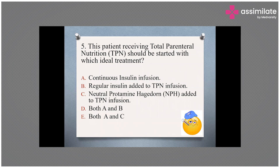The final question from today's case scenario covers management of diabetes in a critically ill patient. The patient presented with subacute intestinal obstruction and has been advised total parenteral nutrition. The question is: what should this patient be started with? Options are: A) continuous insulin infusion, B) regular insulin added to TPN infusion, C) NPH insulin added to TPN infusion, D) both A and B, E) both A and C, or F) either A, B, or C.